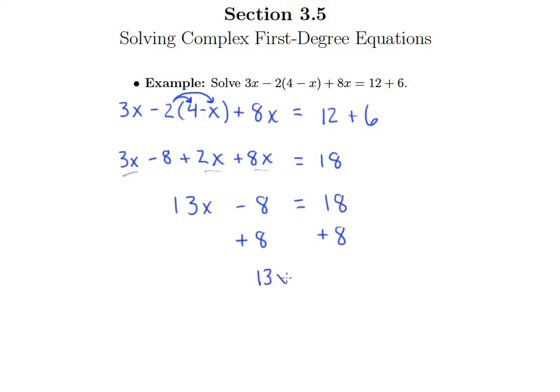So we have 13x equals, 18 plus 8 is 26. And then we can take 13x divided by 13, 26 divided by 13, and so that leaves me with x equals, and 13 goes into 26 exactly twice. So x equals 2.